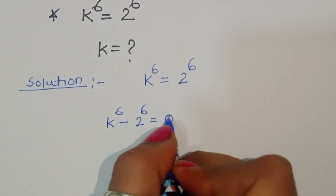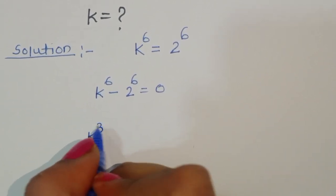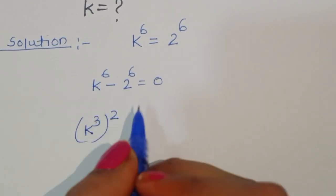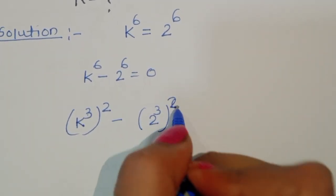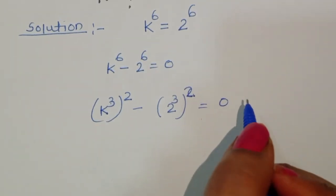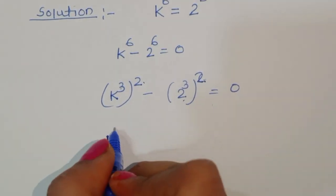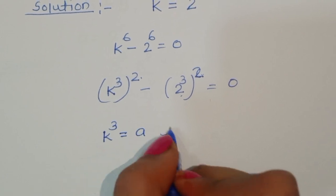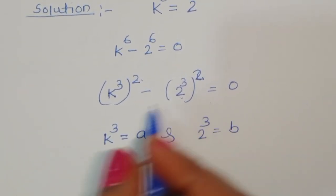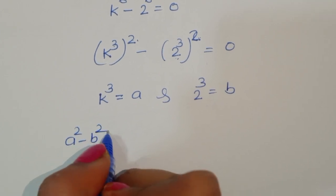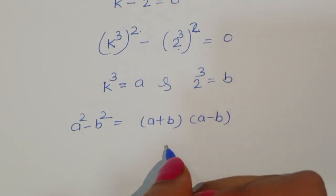Now k^6 we can write as (k^3)^2, and 2^6 we can write as (2^3)^2, so this becomes (k^3)^2 - (2^3)^2 = 0. This is the form of a^2 - b^2, where a = k^3 and b = 2^3. The formula for a^2 - b^2 is (a+b)(a-b).